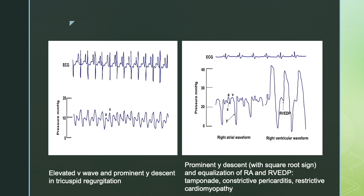Examples of elevated V waves and prominent wide descent are seen in tricuspid regurgitation. Prominent wide descent in a right atrial waveform is abnormal and is typically seen in patients with tamponade, constrictive pericarditis, or cardiomyopathies. The normal RA pressure is around 6 mmHg with a mean of 3. Elevated RA pressure can be due to pulmonary hypertension, left-to-right shunts, tricuspid regurgitation, or tamponade. An elevated A wave suggests tricuspid stenosis or low ventricular compliance; an absent A wave is seen in atrial fibrillation; a sawtooth wave is seen in atrial flutter.